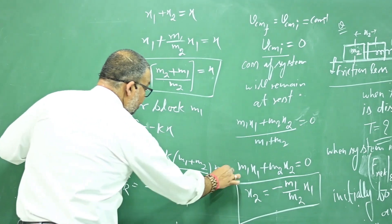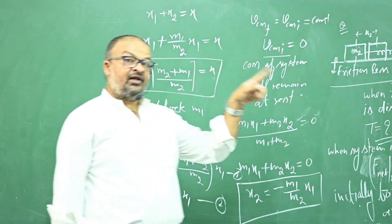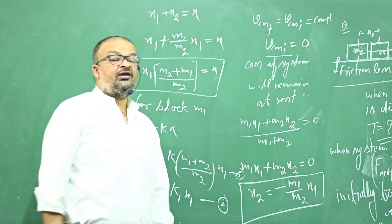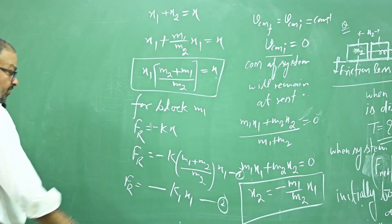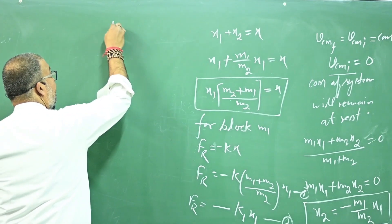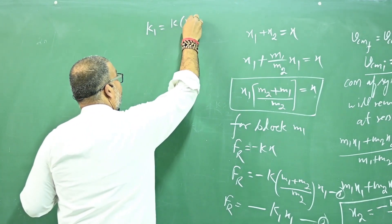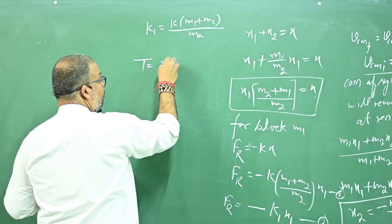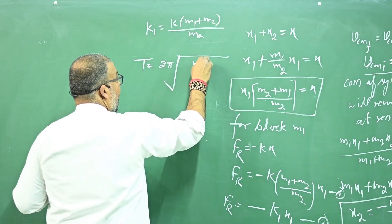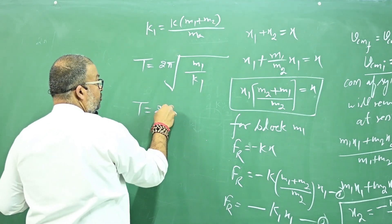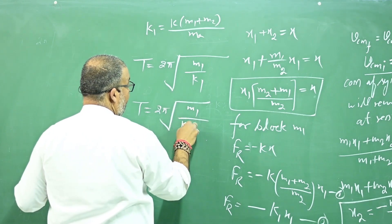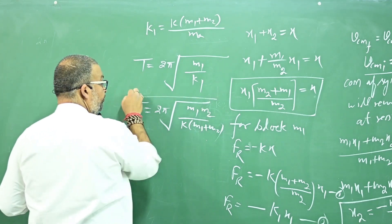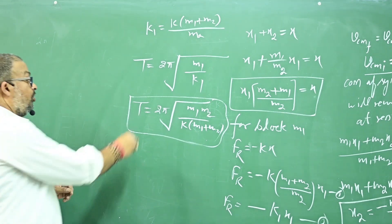Comparing this to the standard form — restoring force = minus k1·x1 — the effective spring constant for block M1 is k1 = k·(M1 + M2)/M2. The time period of block M1 is therefore T1 = 2π √(M1/k1) = 2π √(M1·M2 / (k·(M1 + M2))).